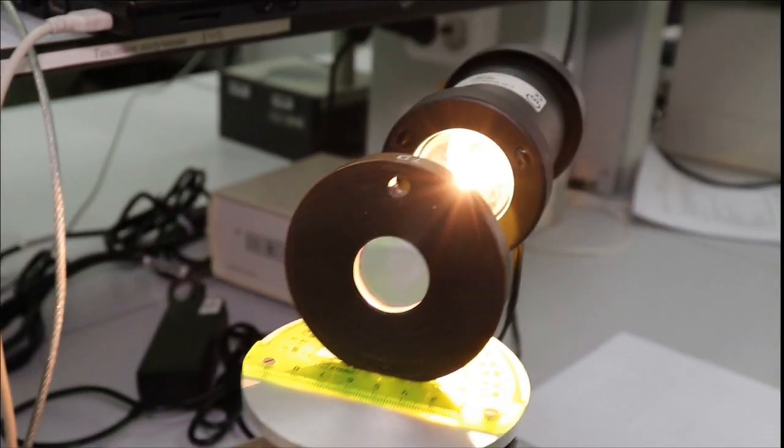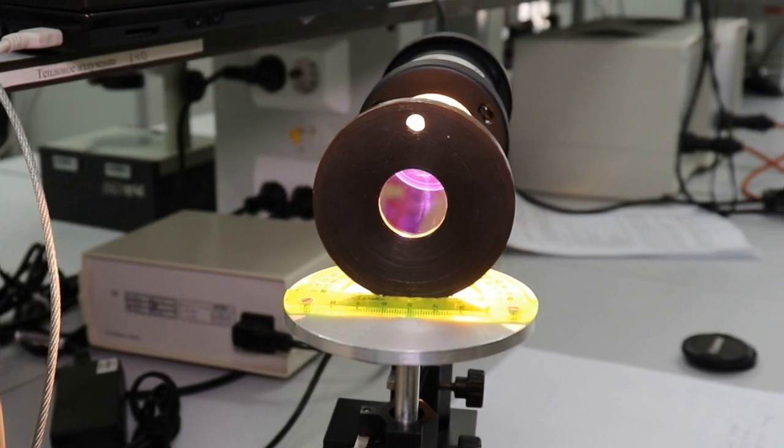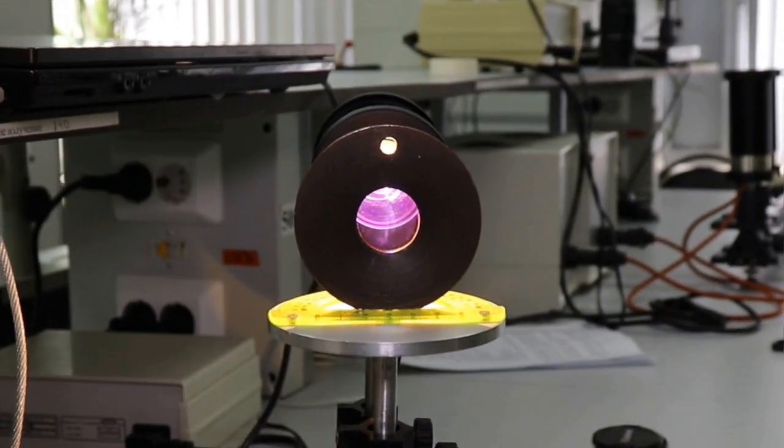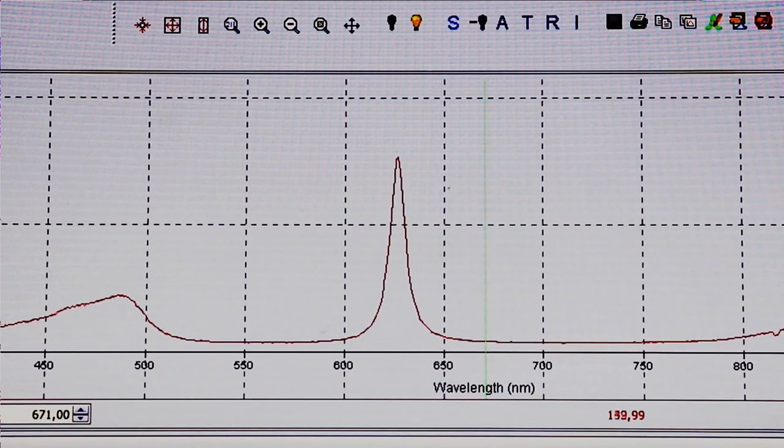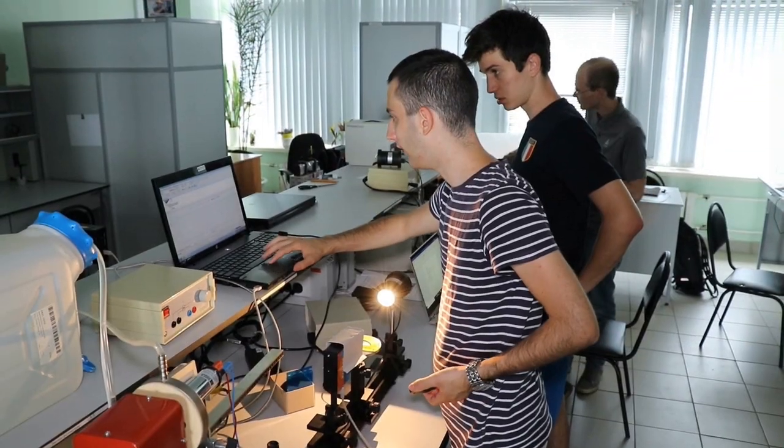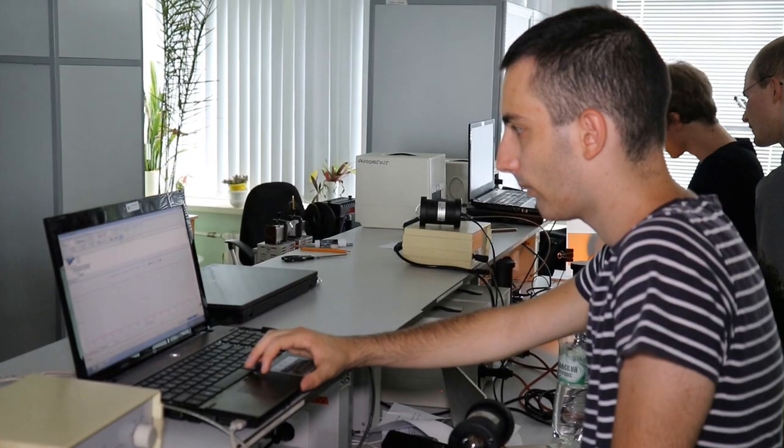What makes interference filters so special is their ability to transmit only certain frequencies of the electromagnetic spectrum in a very narrow band. This is made possible by very thin dielectric layers with different refractive properties.